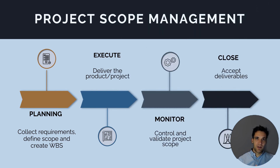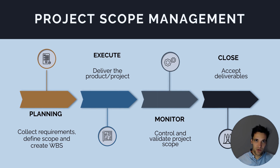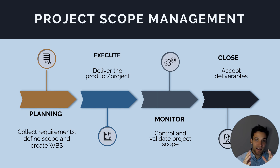If we map project scope management out across the life cycle of a project — and I know that PMBOK does this with their process groups — this diagram gives you a simpler way to get your head around what scope management is. It starts off in the planning phase where we collect requirements, engage with our stakeholders, work out exactly what we're going to be delivering, define the scope, and create a work breakdown structure. We then move into project delivery where we execute the project scope.